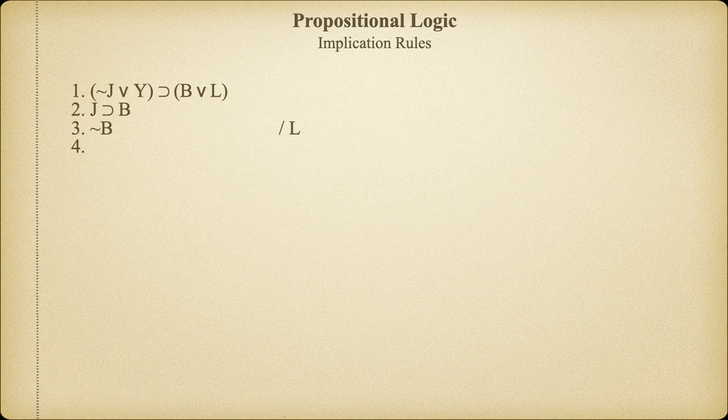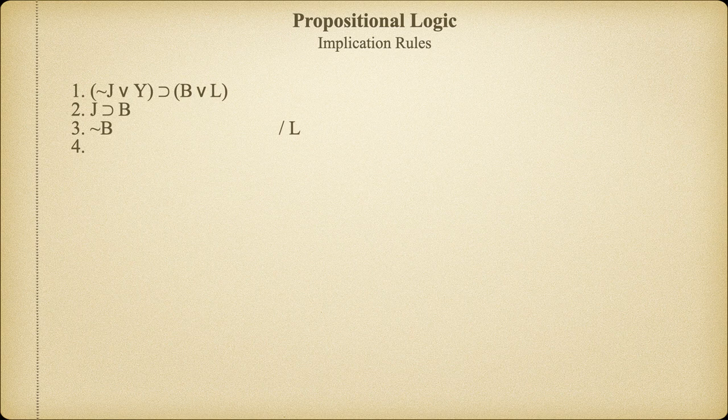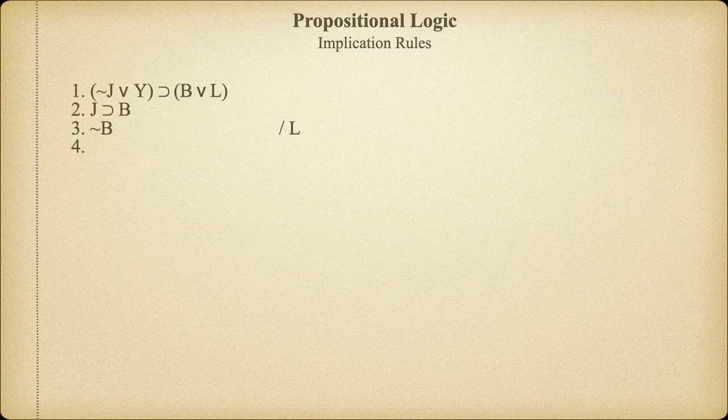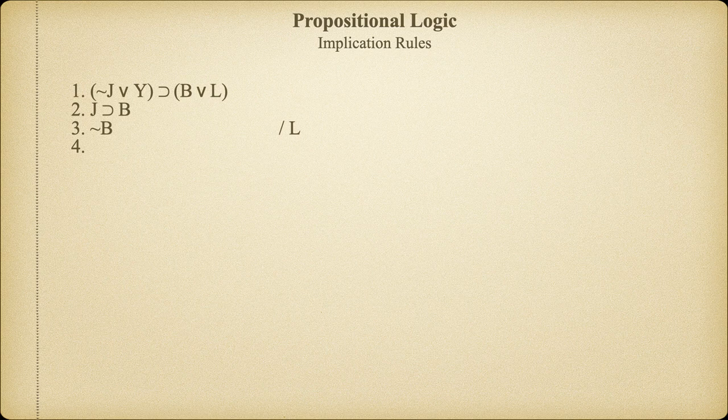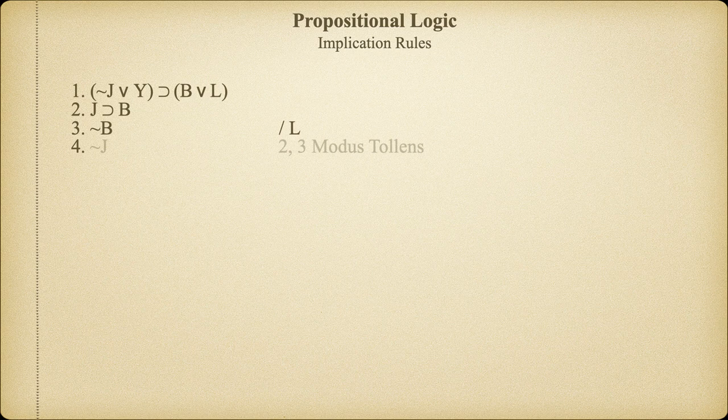First, we look to see where the conclusion is located in the premises, and we find it in premise one. Clearly, to conclude L by itself, we could perform a disjunctive syllogism. However, since B or L is part of a material implication, we have to get it on a line by itself first. Then we can perform the disjunctive syllogism. But in order to do that, we'd need not J or Y on a line by itself. But we don't have that either. But notice that we can get not J on a line by itself and then add what we need from there.